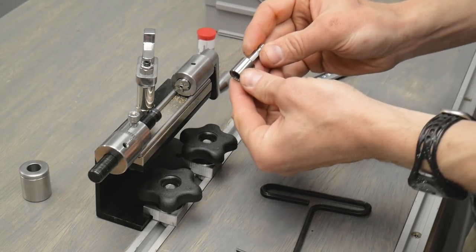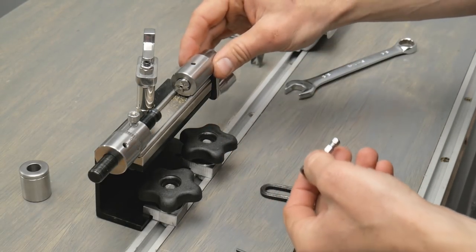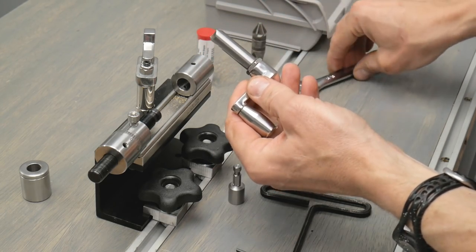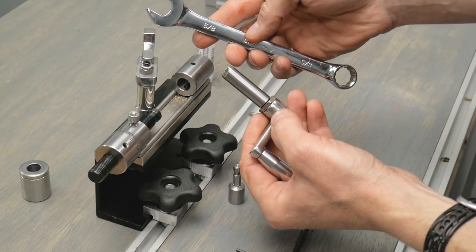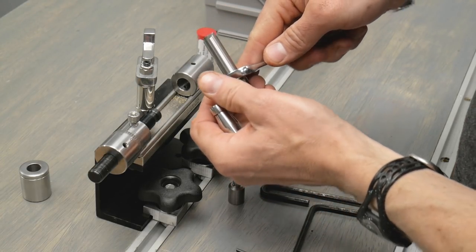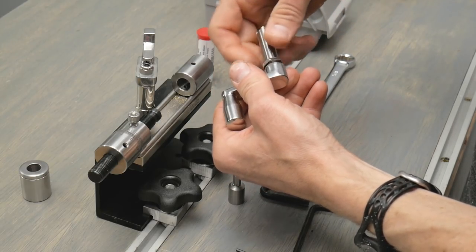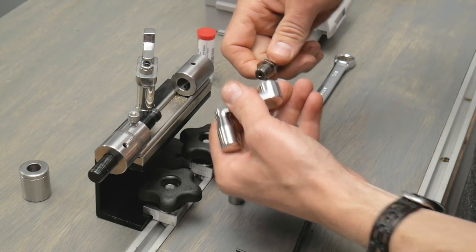The power adapter for the L.E. Wilson Case Trimmer basically replaces the crank handle, and replacing it is really easy. All we need is a 5/8 inch wrench. I'm just going to crack the nut here, and when we crack the nut the trimmer head is just going to screw right off.